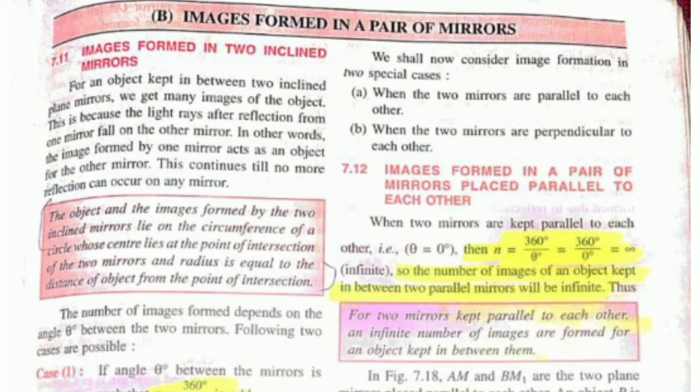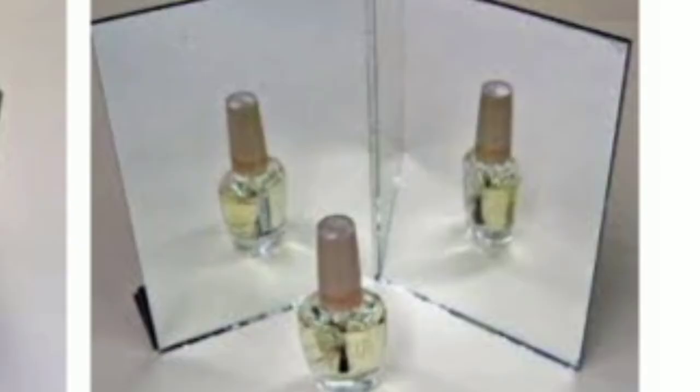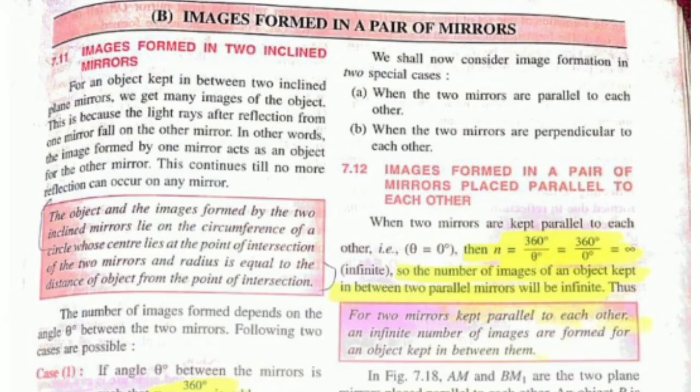Let's start without wasting any time. First, how many images are formed in two inclined planes? By inclined planes we mean this picture as you can see. Here it's written the number of images formed depends on the angle theta between the two mirrors. Basically theta, like in math problems we write suppose let it be x, similarly for angles we write angle theta, meaning the value is not known to us.